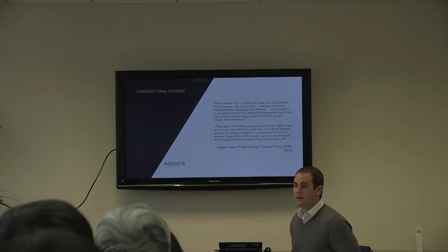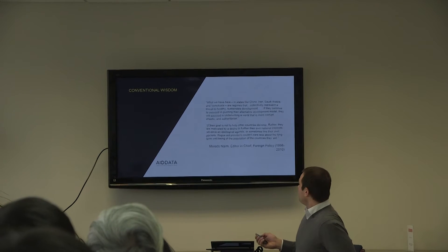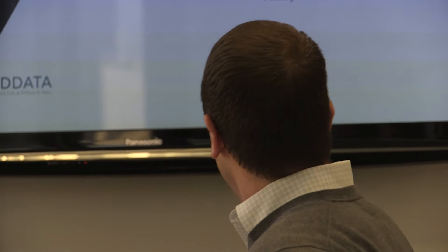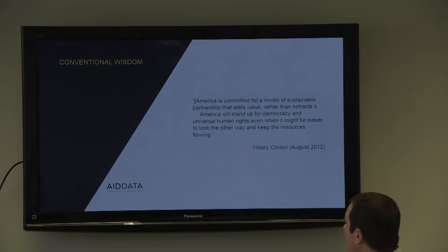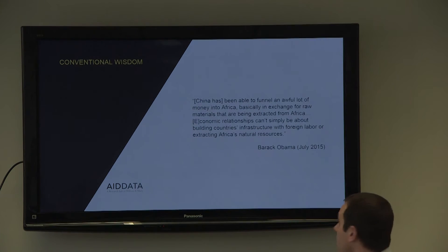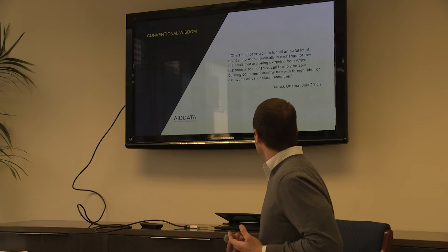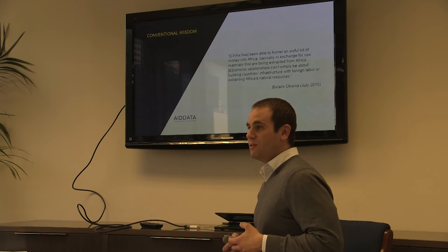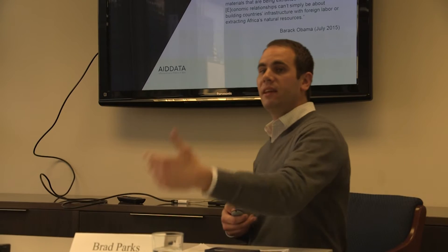This appeared in a 2009 or 2010 Foreign Policy article entitled 'Rogue Aid.' Here's Hillary Clinton making a veiled criticism of China: 'America is committed to a model of sustainable partnership that adds value rather than extracts it. America will stand up for democracy and universal human rights, even when it might be easier to look the other way and keep the resources flowing.' Barack Obama, in advance of a July 2015 trip to Africa, said: 'China's been able to funnel an awful lot of money into Africa basically in exchange for raw materials being extracted. Economic relationships can't simply be about building countries' infrastructure with foreign labor or extracting Africa's natural resources.' These are not fringe characters making these strong claims about China's intentions.